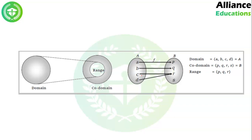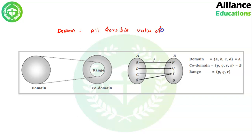Domain means all possible values of x — specifically, all possible values of x for which f(x) exists. This is the definition of domain.